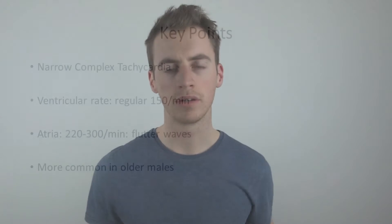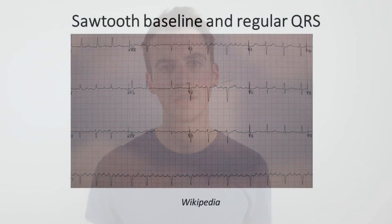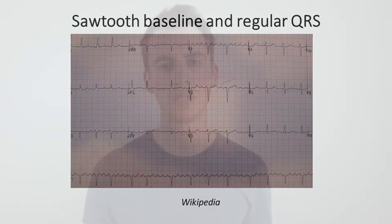Atrial flutter is characterized typically by a ventricular rate of about 150 beats per minute and an atrial rate of about twice that. So normally you see a two-to-one rate between the atria contracting and the ventricles contracting. In terms of the features on an ECG, you're going to see a sawtooth baseline with a regular QRS complex and typically a two-to-one block, meaning two atrial contractions or P waves for each QRS complex representing ventricular contraction.